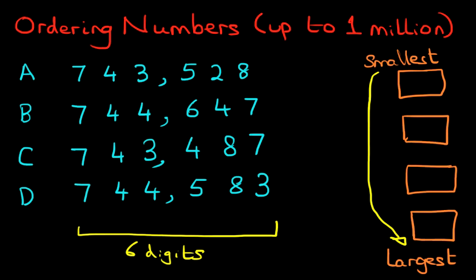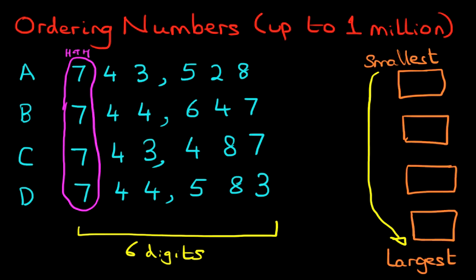So what we're going to do is start on the left hand side and compare the hundred thousands. Let's just label it 'hundred thousands' and circle them. What do we notice? All of them are seven. So the hundred thousands do not tell us which one is larger or which one is smaller.